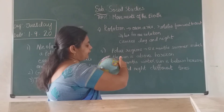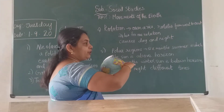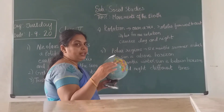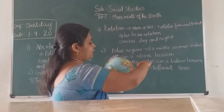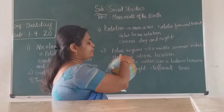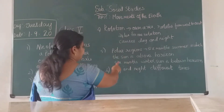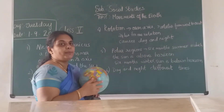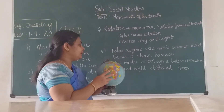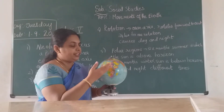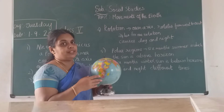The horizon is the place where the sky and the land appear to meet. When the sun is above the horizon, that part has summer; when below the horizon, it is winter. Because of rotation, different places have different times — for example, when it is 10:30 AM in India, there is nearly a 12-hour difference in America.